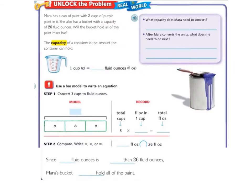Now we will unlock the problem. Mara has a can of paint with 3 cups of purple paint in it. She also has a bucket with a capacity of 26 fluid ounces. Will the bucket hold all of the paint Mara has? The capacity of a container is the amount the container can hold.